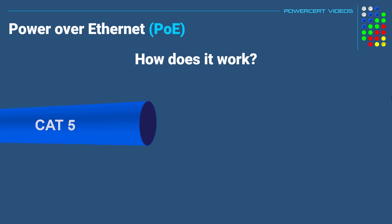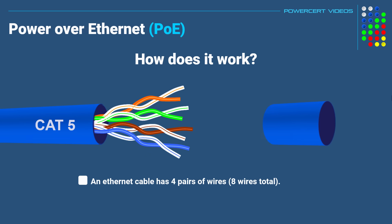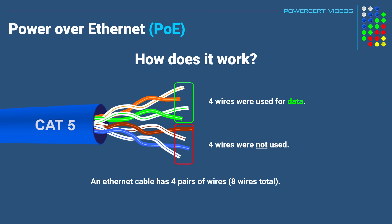So how does PoE work? How does an ethernet cable supply a networking device with both data and power? Well, an ethernet cable has four pairs of twisted pair wires inside, so it has a total of eight wires. In CAT5 and previous versions of ethernet cable, four of those wires are used to transfer data, but the other four wires were not used.